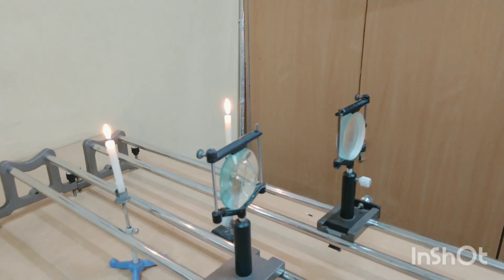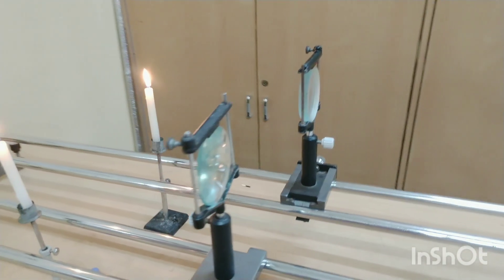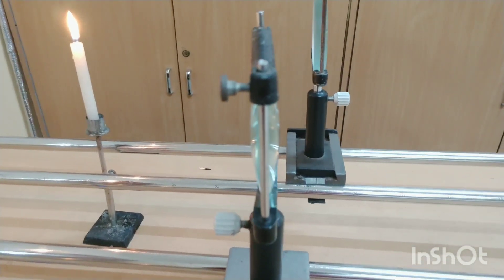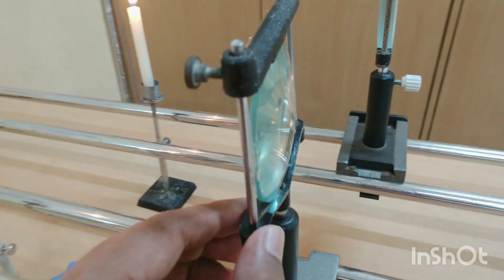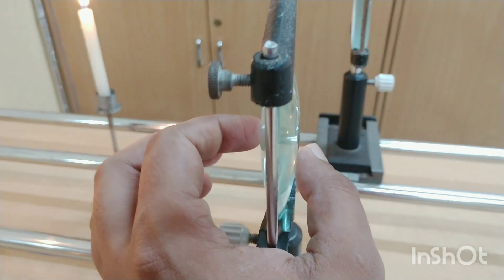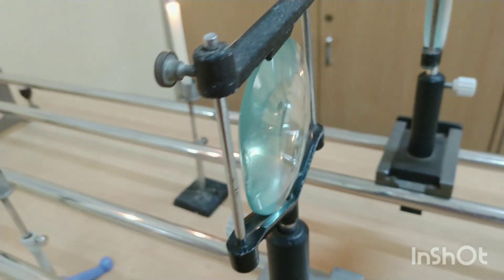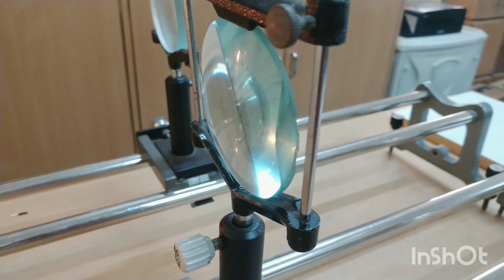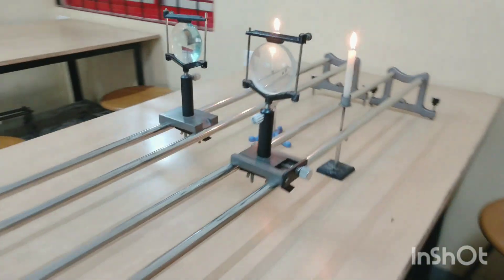So here we have two lenses, one is convex and another one is concave. Let's first identify which is a convex lens. You can see there's a bulge at the center and at the edge it is tapering. So this is a convex lens, and on the other side I have a concave lens.